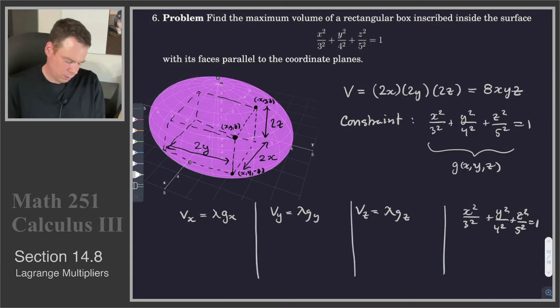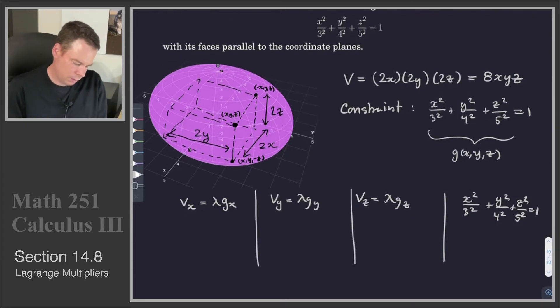So let's work out these things. What is V_x? V_x would be 8yz, that's got to equal λg_x. So that's got to be 2λx/3² or 9.